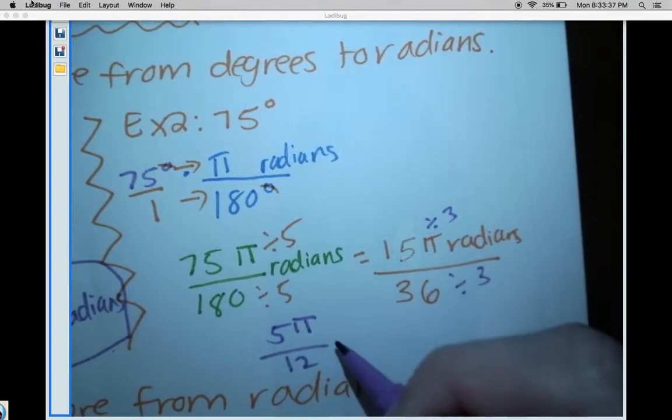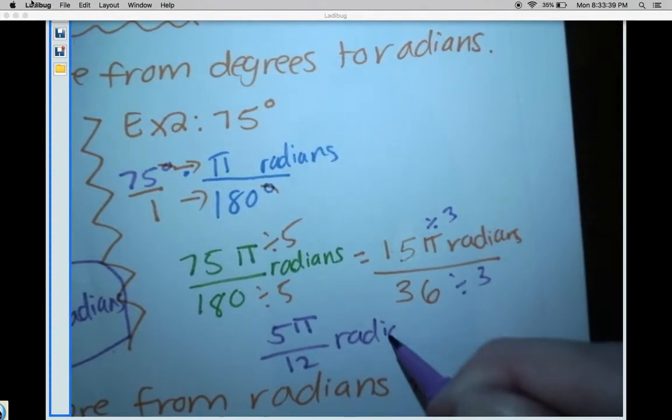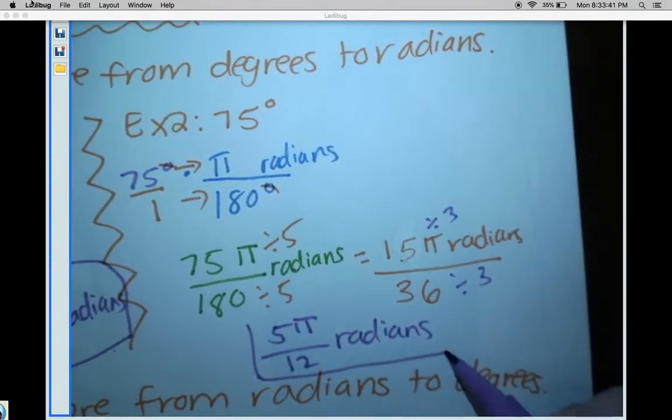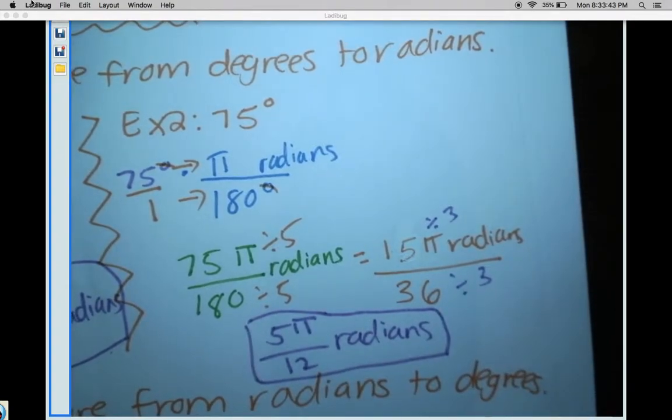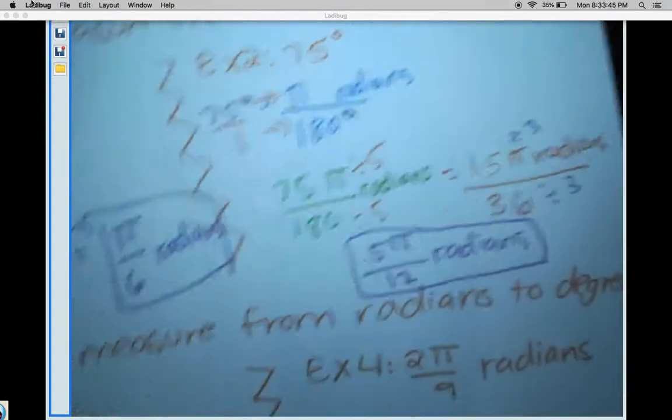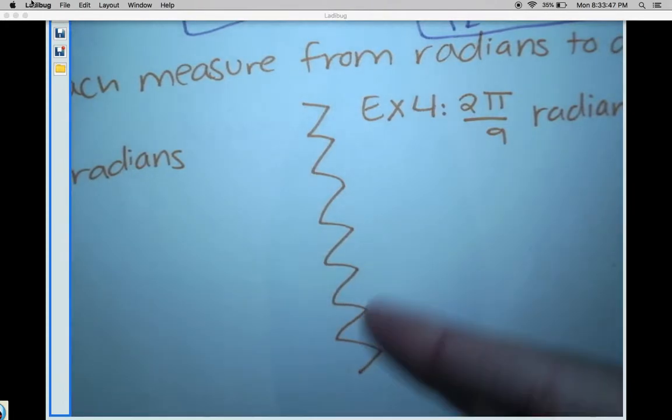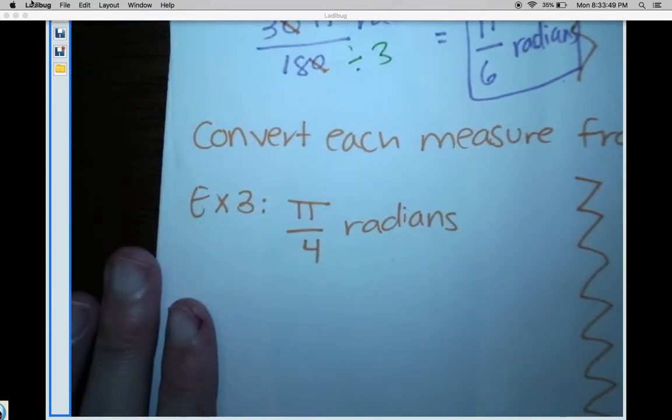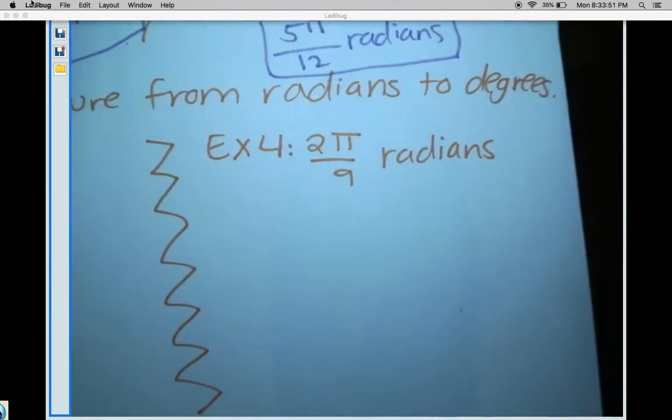So it's 5π over 12 radians. There we go, nice! In our next examples, we'll be reversing the process. We'll start with radians and convert these to degrees. So get excited about that!